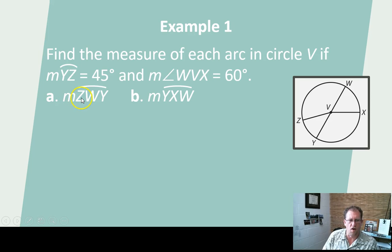Let's find measure of arc ZWY. That's the whole circle minus this 45 degrees. So 360 minus 45 degrees is 315.